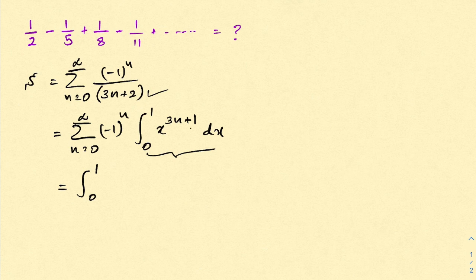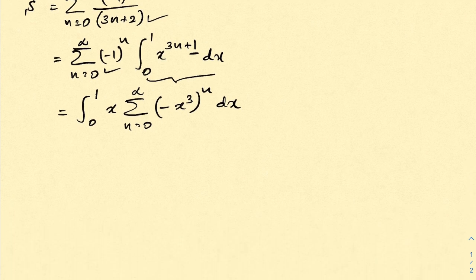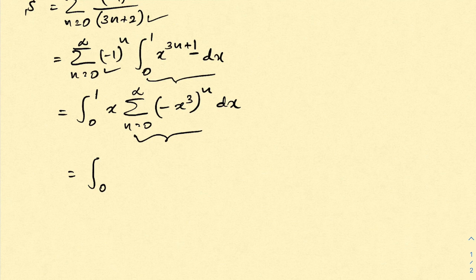Inside we have x times the sum of n equals 0 to infinity of minus x cubed raised to the n, times dx. We know this infinite series represents 1 over 1 plus x cubed, so we have the integral from 0 to 1 of x over 1 plus x cubed dx.